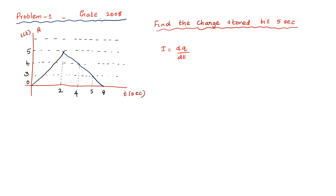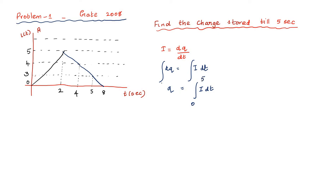Next, I am going to explain a problem regarding charge. Consider this problem: a current waveform is given and the question asks to find the charge up to 5 seconds. The formula is I = dQ/dT, so dQ = I·dT. Integrating both sides, Q = ∫i dT from 0 to 5 seconds. This is equivalent to finding the area under the current-time curve.